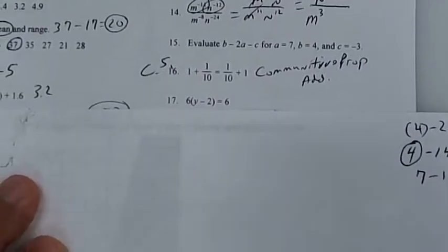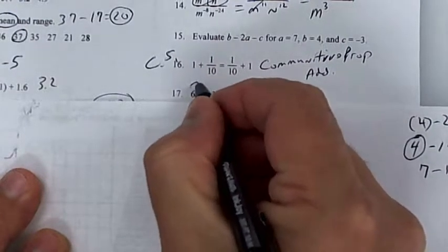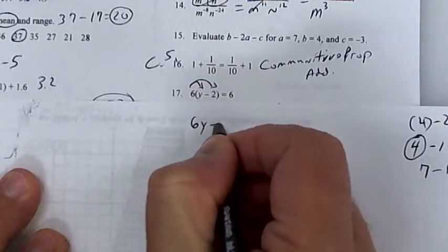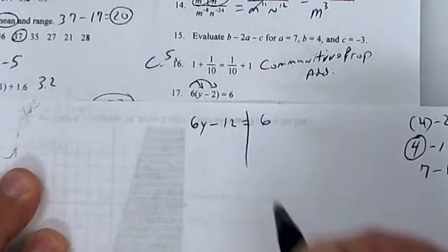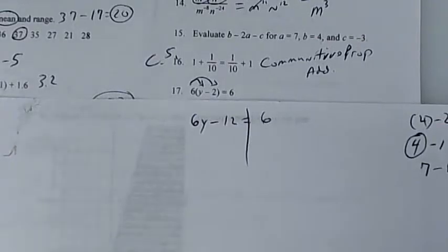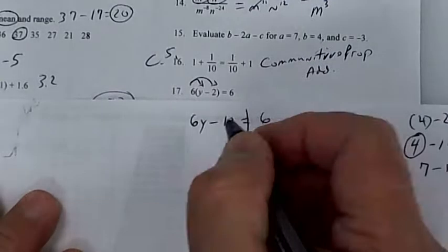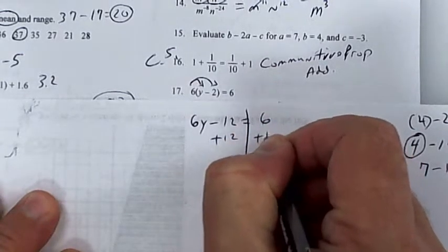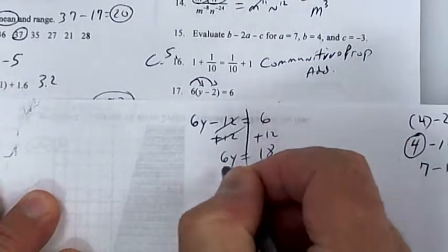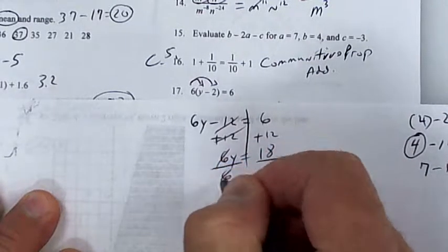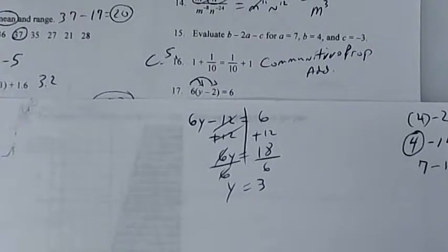Distribute first: 6y minus 12 equals 6. To get y by itself, add 12 and then divide by 6.